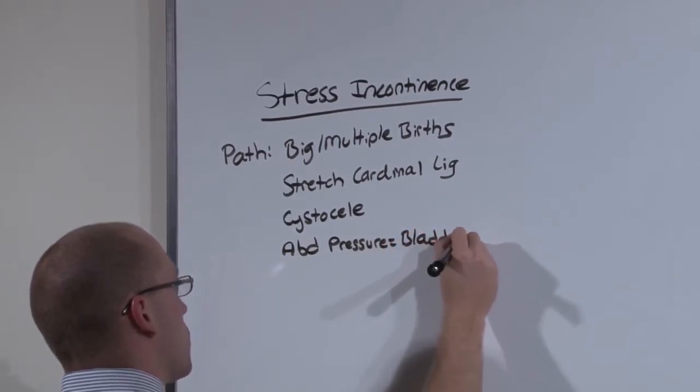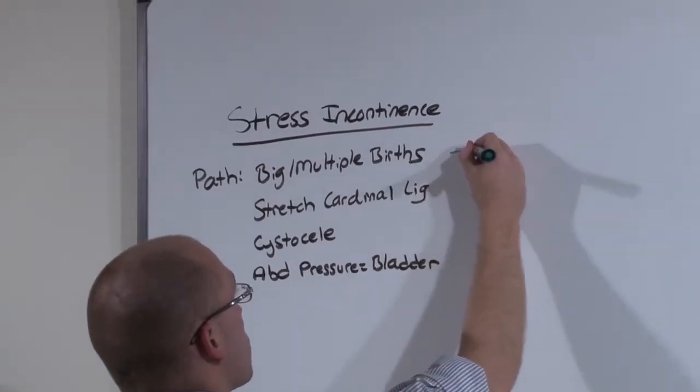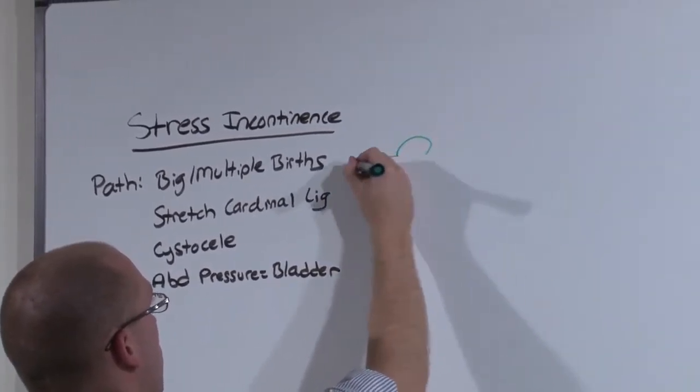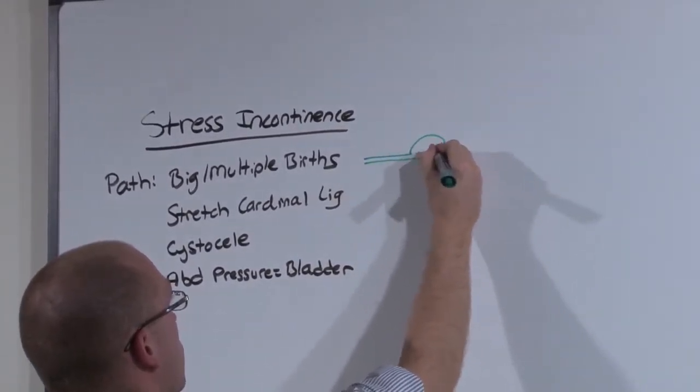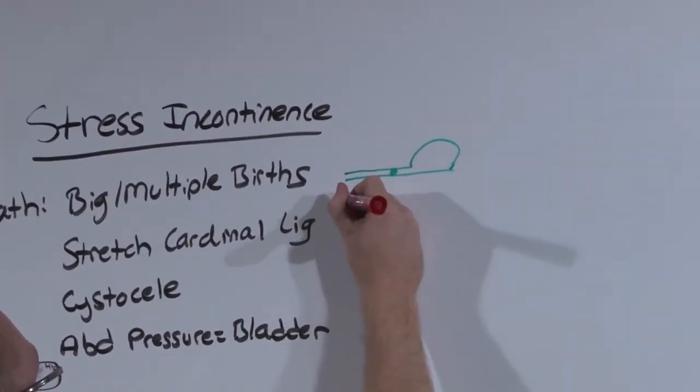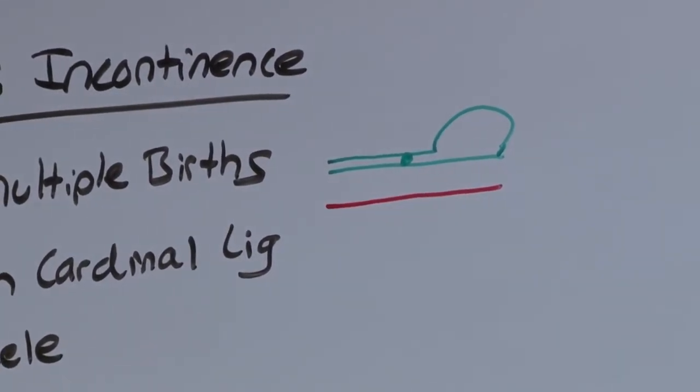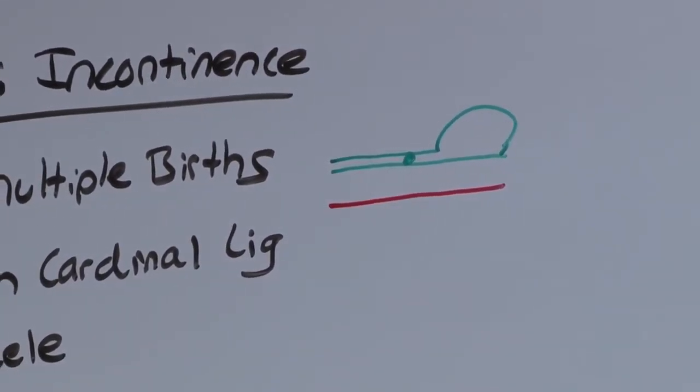Let me show you what this looks like to help you understand a little bit better. A normal patient has a urethra and a bladder, and in the urethra is a sphincter. It overlies the vagina.